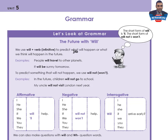In the negative case we use 'will not' or 'won't', and you are asked to remember this. The short form of 'will' is apostrophe 'll', pronounced: I'll, he'll, she'll, it'll, we'll, you'll, they'll. The short form of 'will not' is 'won't'.